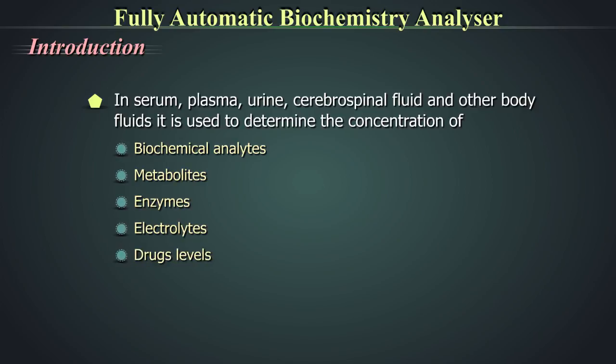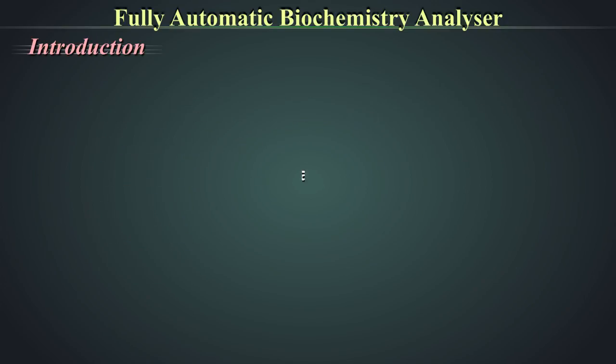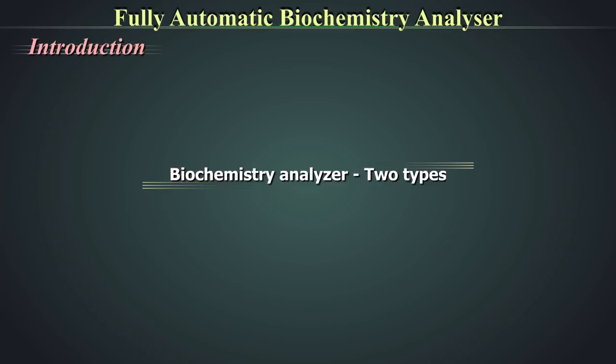These analyses are performed on samples of serum, plasma, urine, cerebrospinal fluid, and other body fluids. Biochemistry analyzers can be of two types: the benchtop model or the floor model.